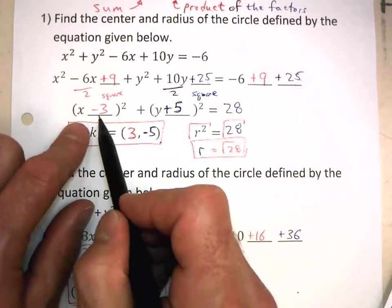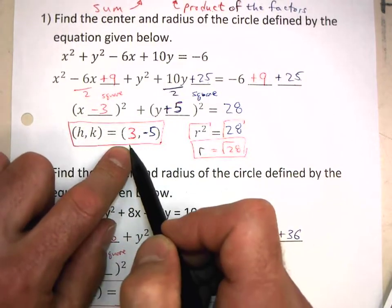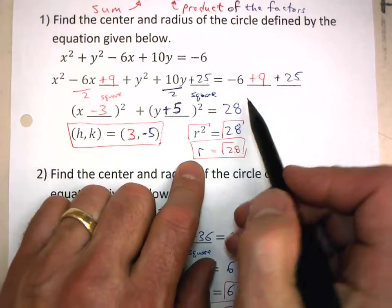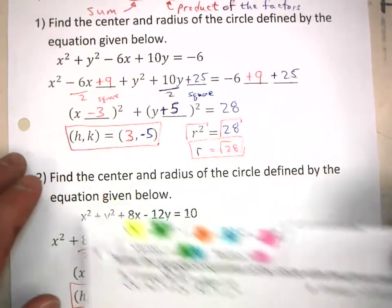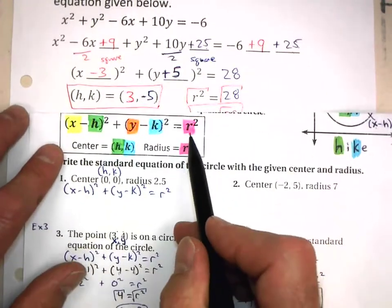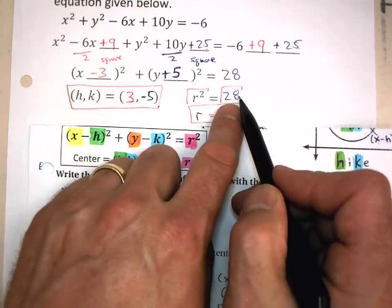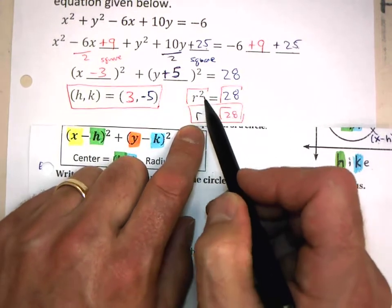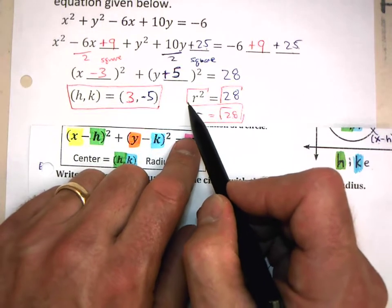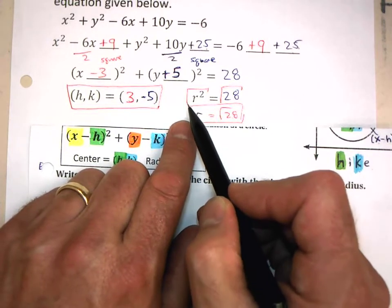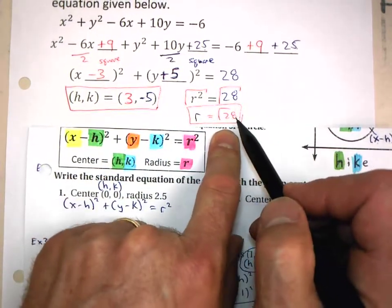You can think of it as: take whatever this number is and take the opposite of it, and that will give you the coordinates for the center. And remember that this constant on the far right is not equal to r — it's equal to r squared. So r squared equals 28, but I want r, so I need to get rid of that square by doing the inverse, which is the square root. The square root of r squared is r, and the square root of 28 — we will just leave that as the square root of 28.